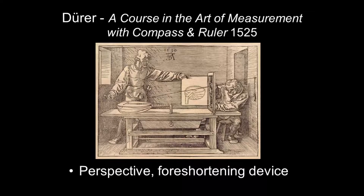Dürer was very interested in things we often associate with the Italian Renaissance: perspective and proportion. He actually wrote two different books. One was a course in the art of measurement with compass and ruler, including woodcuts showing devices to help people do foreshortening — for example, how to make a lute appear foreshortened. Another book, published right after his death, is on human proportion.